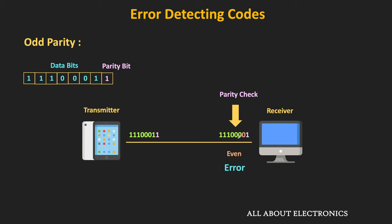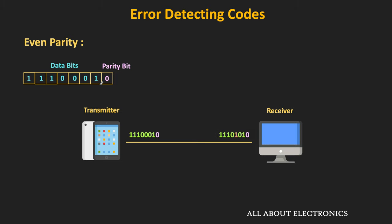Similarly, let's see the case of even parity. Let's say these are the data bits and for even parity, this parity bit should be equal to 0. When this code is transmitted from the transmitter to the receiver side, let's say because of some error, this bit changes to 1. At the receiver, the parity checker circuit will check the parity of the received code. As you can see, the total number of 1s in the received code is equal to 5. And since it is odd, that means there is some error in the received code. In this way, with the help of this parity bit, we can detect the error in the received code.